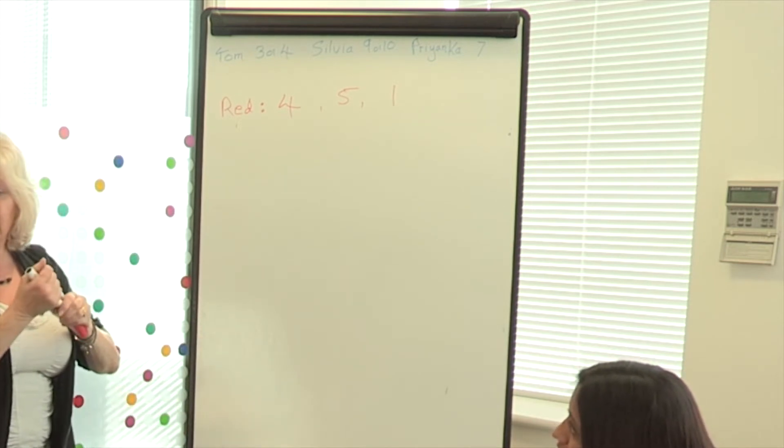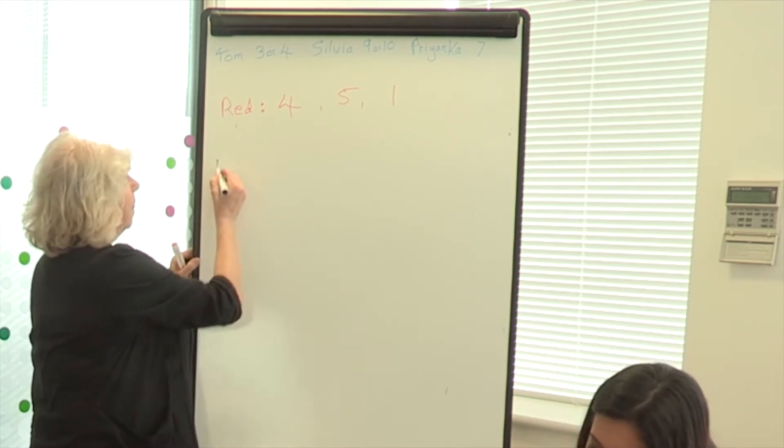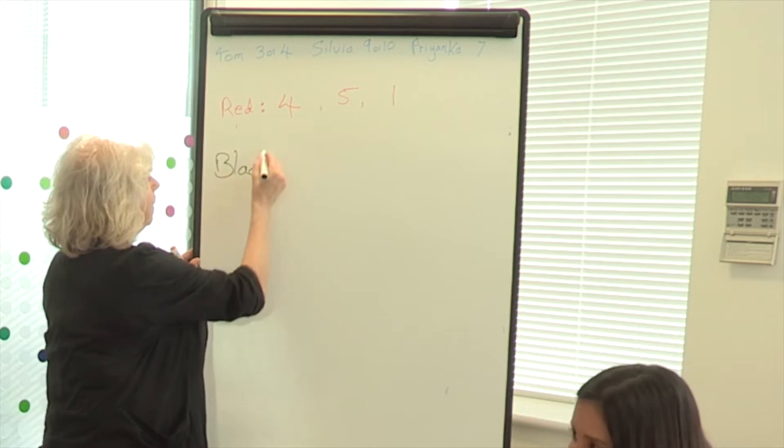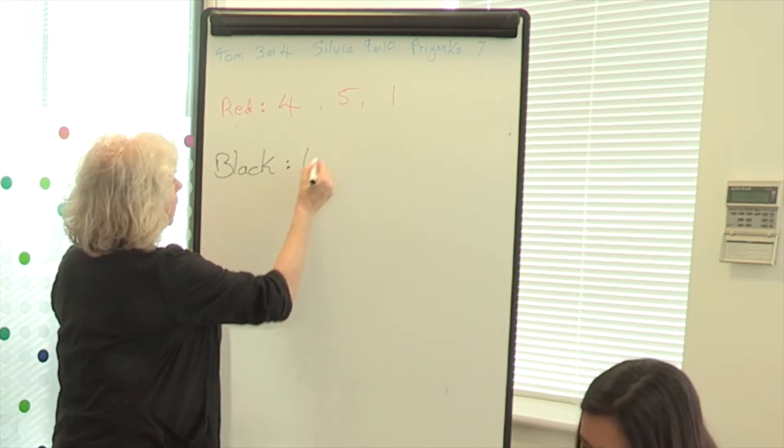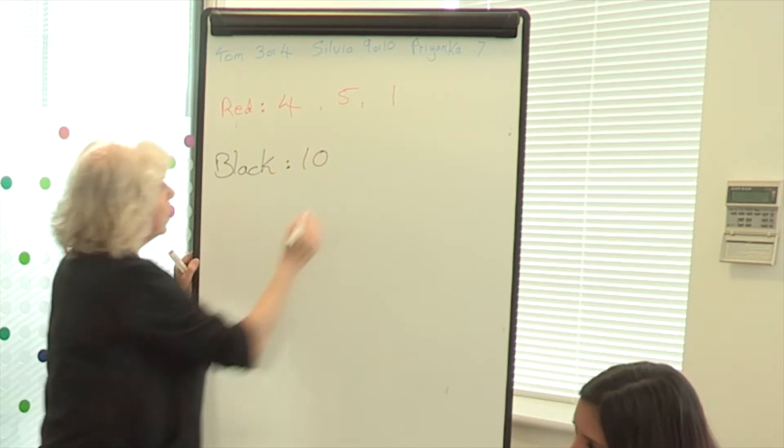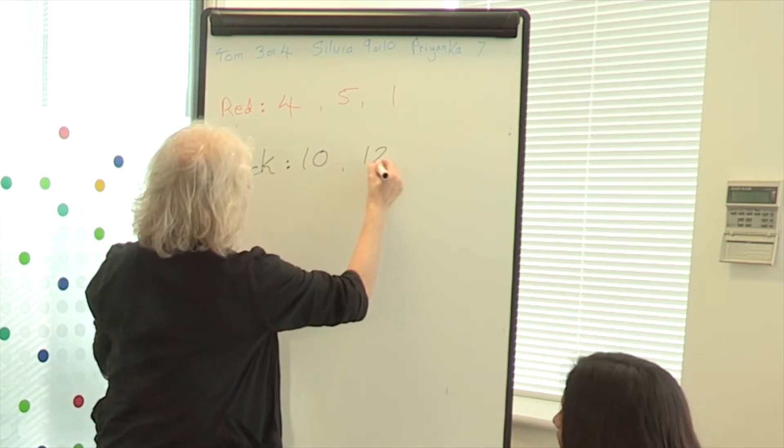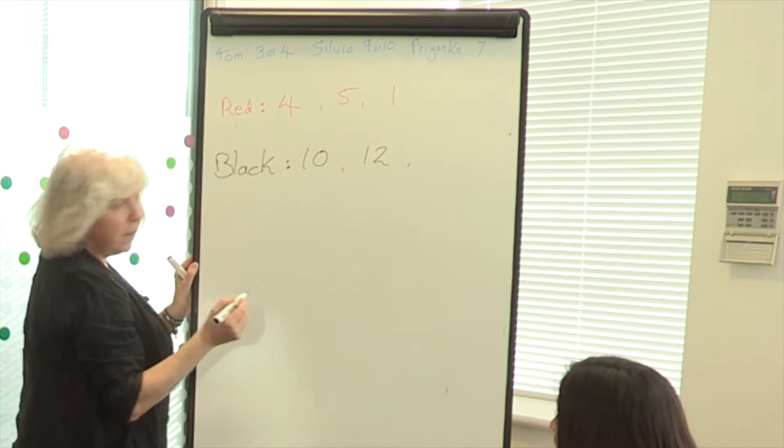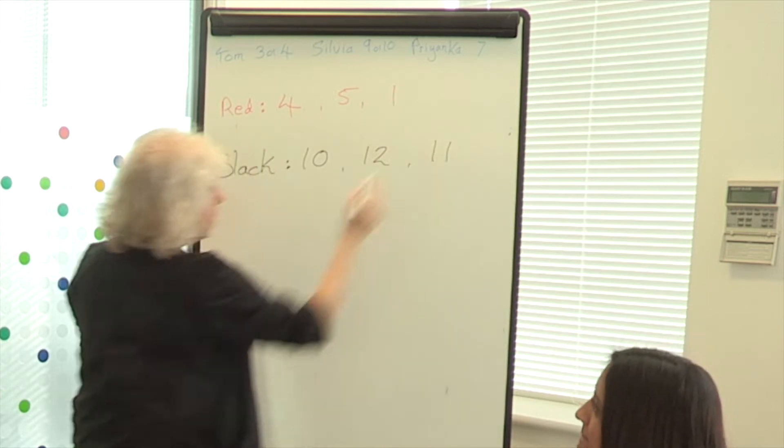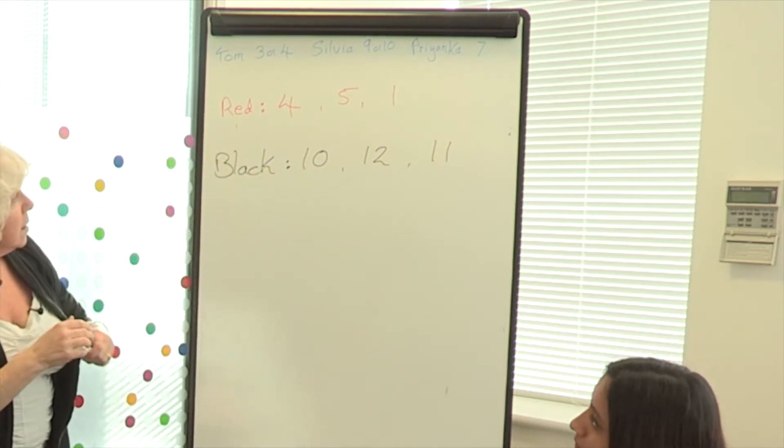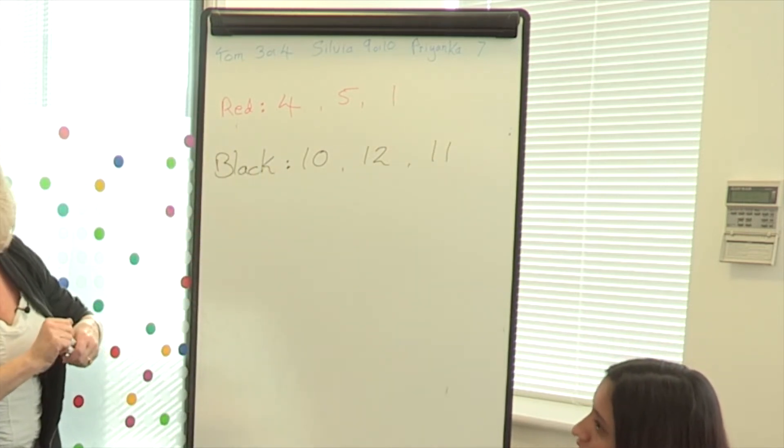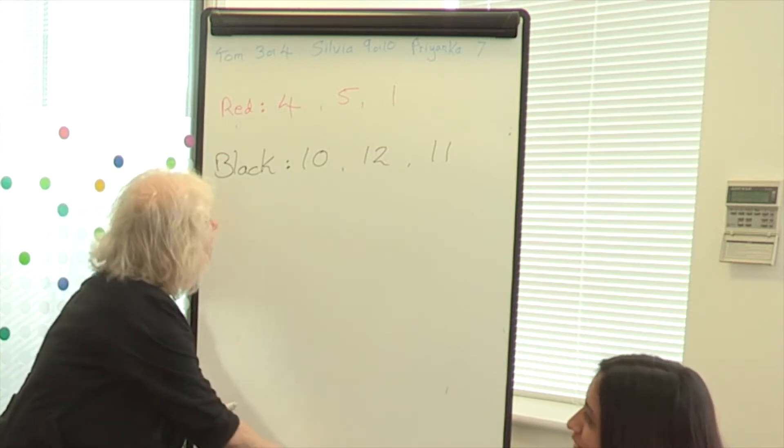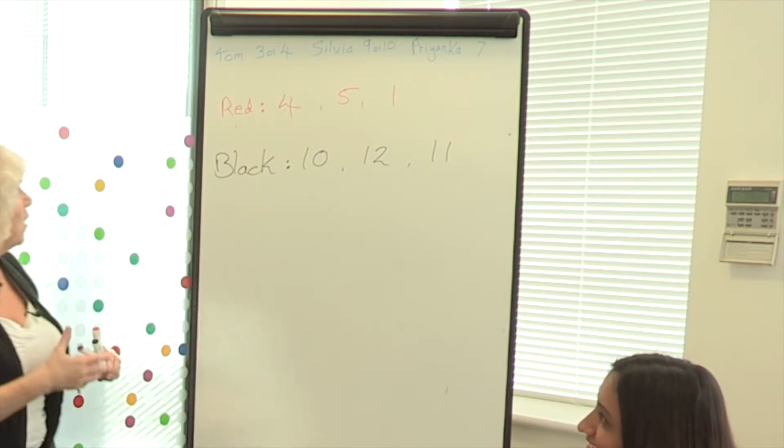What about maybe the black dice? So I've got 10. 10. I've got 12. 12. I've got 11. And 11. So what do we think there? It does look like... It's a very high number. It is a very high number isn't it?